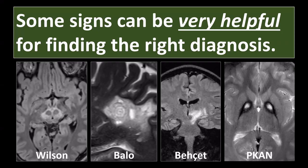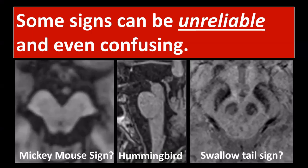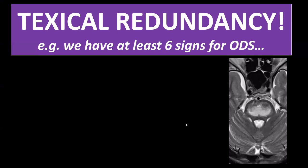Then there are signs that may not be 100% pathognomonic but are very helpful for finding the right diagnosis, especially for rare diseases you wouldn't automatically consider — like the panda sign in Wilson's disease, the onion bulb sign in Baló's concentric sclerosis, the cascade sign in Behçet's disease, and the eye of the tiger sign in pantothenate kinase deficiency. On the other hand, some signs are unreliable and sometimes confusing, like the Mickey Mouse sign and hummingbird sign for progressive supranuclear palsy, and the swallow tail sign, which I find too subjective to be reliably useful.